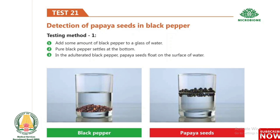Test 21: Detection of papaya seeds in black pepper. Method 1: Add some black pepper to a glass of water. Pure black pepper settles at the bottom. In adulterated black pepper, papaya seeds float on the surface of the water.